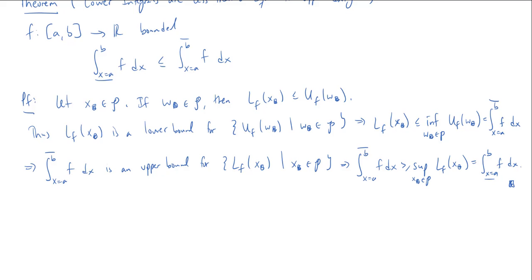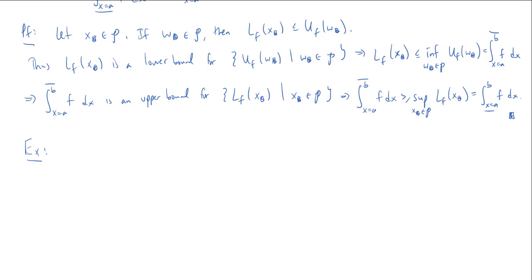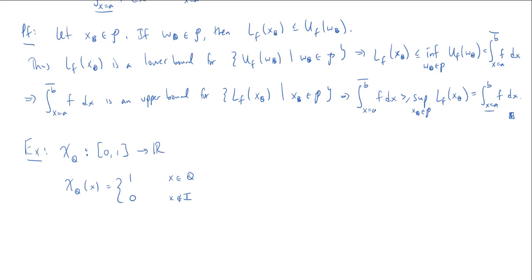Let's do an example. Our example uses the Dirichlet function, also called the characteristic function of the rationals or the indicator function of the rationals. This is a function on [0, 1]: if I input some rational number it returns 1, and if I input an irrational number it returns 0. It's called an indicator function because it indicates whether or not x is in the rationals.